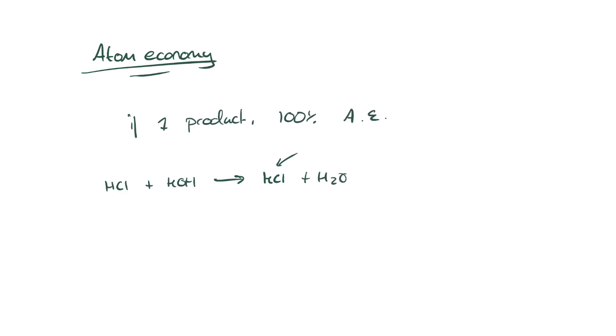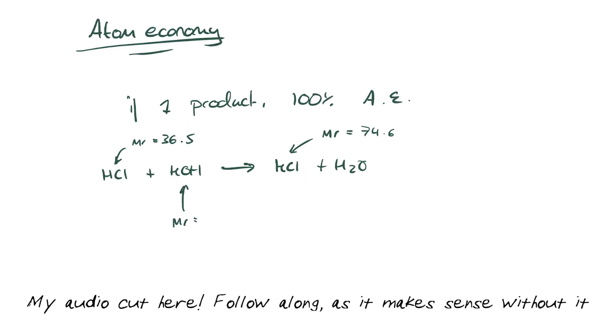Atom economy is how much of the total relative mass of the reactants ends up in your desired product. If your reaction has one product, atom economy is 100%. The formula is: the molecular mass of the desired product divided by the sum of the molecular masses of all reactants, multiplied by 100 to express it as a percentage.